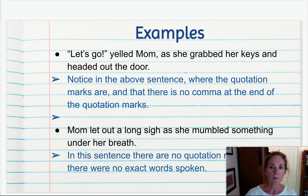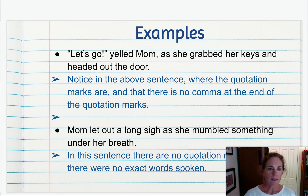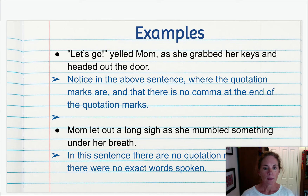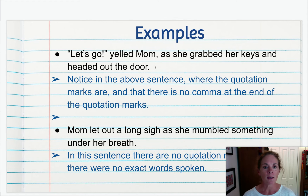"Let's go!" yelled mom as she grabbed her keys and headed out the door. In this sentence you can notice that the quotation marks are around what mom said. There's no comma though, because what mom said is "Let's go!" with an exclamation point. So you put the exclamation point inside the quotes so that you know how she said it. The end of the sentence is actually here at the period.